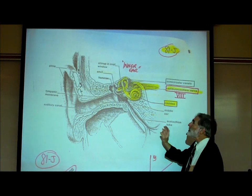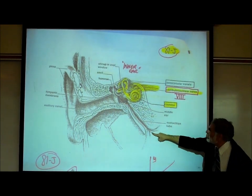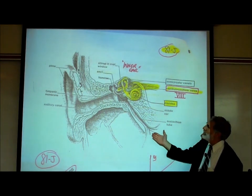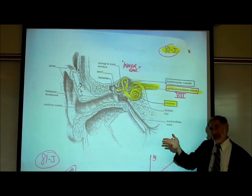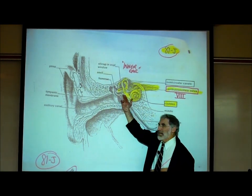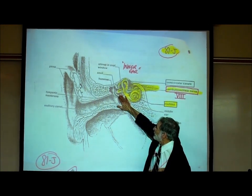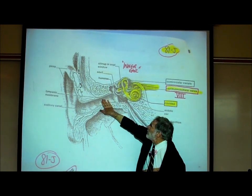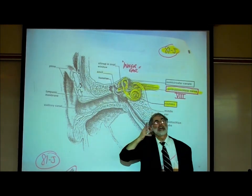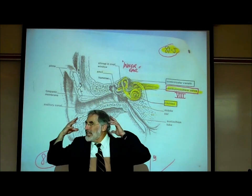Those three little ear bones are in the middle ear. The middle ear is where these three little bones are, and also the eustachian tube. That's a tube that connects up to the throat — technically what's called the nasopharynx. It allows air to flow from your throat into the middle ear so that the air pressure on this side of the eardrum is the same as the air pressure on the outside of your eardrum. If the air pressure is different in the middle ear than in the outer ear, you're not going to hear properly.